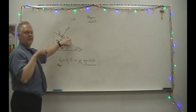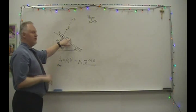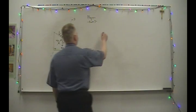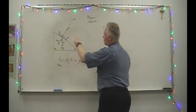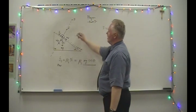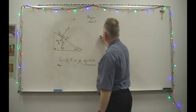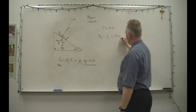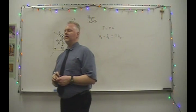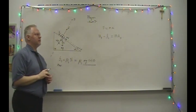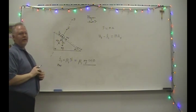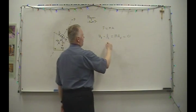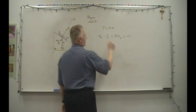The x-component of the weight is the component causing the block to move down the incline. I'm going to find the net force between these two and apply F equals ma. Applying F equals ma: the friction force acts up the incline (negative) and the x-component of weight acts down the incline (positive), so it's Wx minus Fs equals m times a_x. I'm purposely setting the acceleration in the x-direction equal to zero, because I just want the limiting case when it's just about to move.